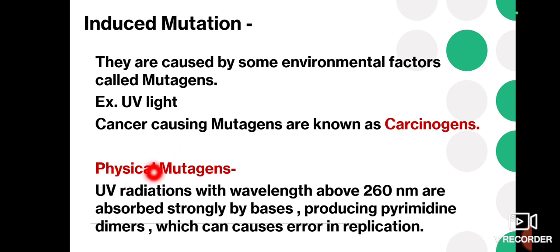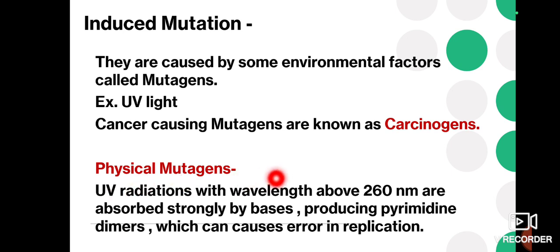Now let's discuss physical mutagens. Physical mutagens basically include radiations. UV radiation with a wavelength above 260 nanometers is absorbed strongly by the bases, producing pyrimidine dimers which can cause errors in replication.